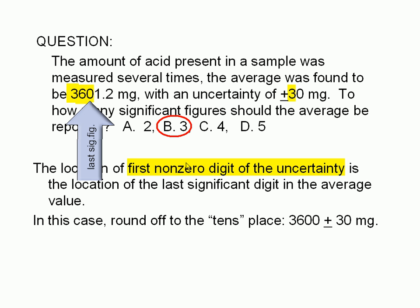To properly report the average, we must round it off to the tens place. We report the amount of acid as 3,600 ± 30 milligrams.